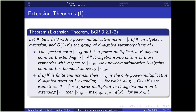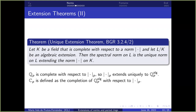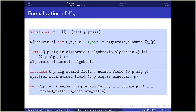If we add extra conditions — specifically that the norm is multiplicative (not just power-multiplicative) and that K is complete with respect to this norm — then for any algebraic extension L over K, the spectral norm on L is the unique multiplicative norm on L extending the norm on K. Going back to our motivating example: Qₚ is complete with respect to the p-adic norm, so we can extend the p-adic norm uniquely to the algebraic closure, and then we define Cₚ by taking the completion. Let me show you the formalization of Cₚ.